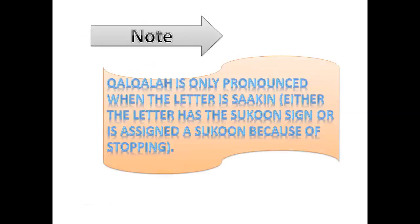Qalqala is only pronounced when the letter is saakin — either the letter has the sukoon sign on it, or it becomes saakin because of stopping. When you stop on a Qalqala letter, make the vibration. When you continue without stopping, don't make the vibration. You should make Qalqala when the letter is saakin only. If the letter has a vowel (harakah), don't make Qalqala.